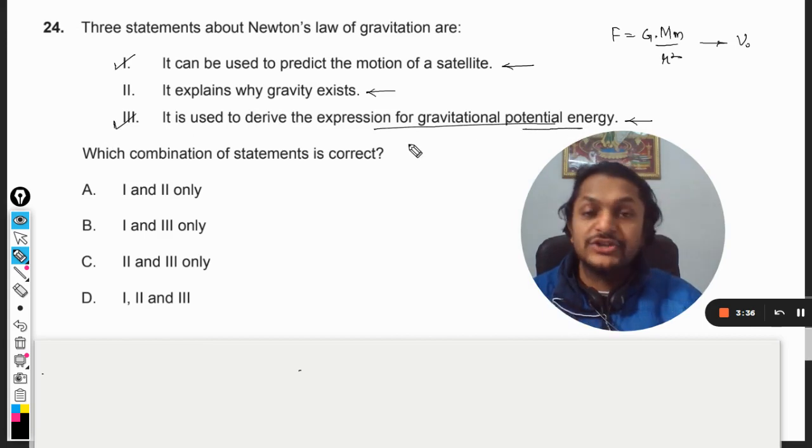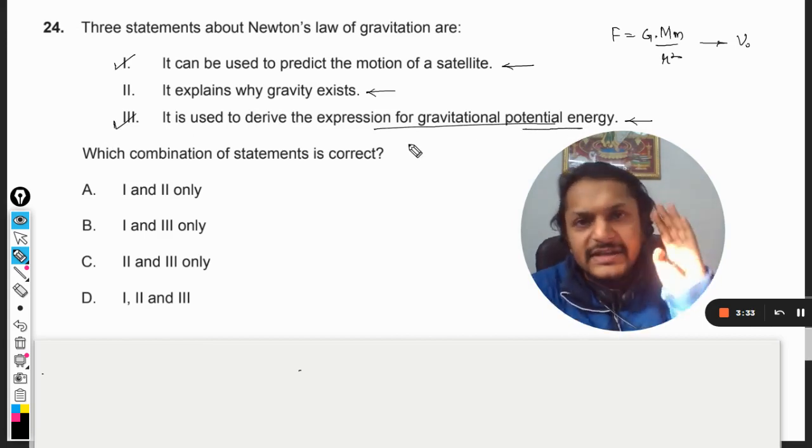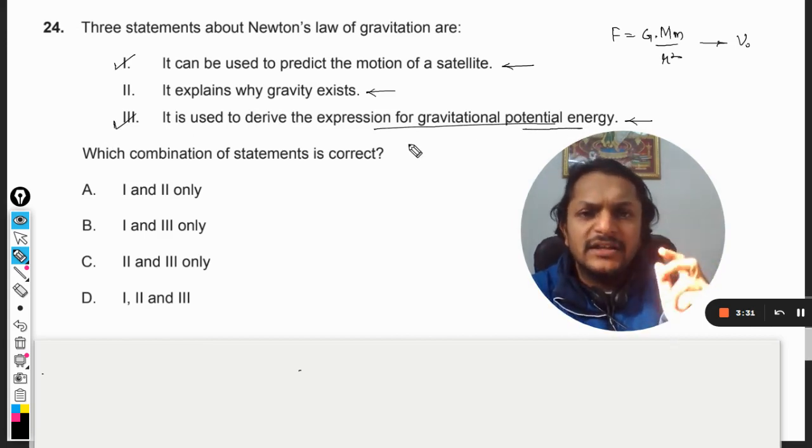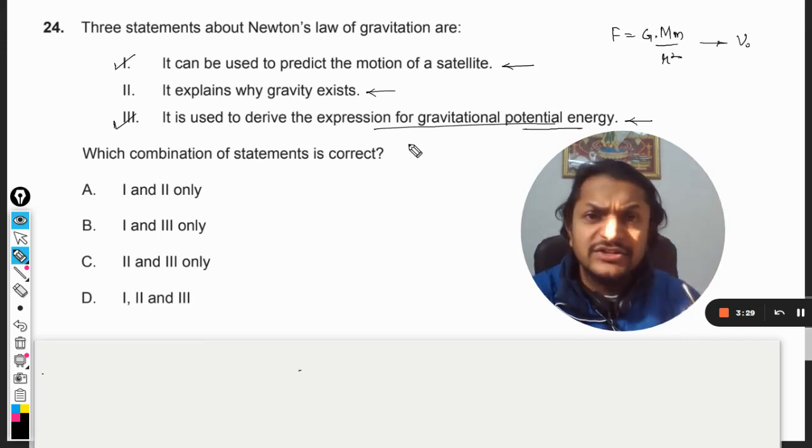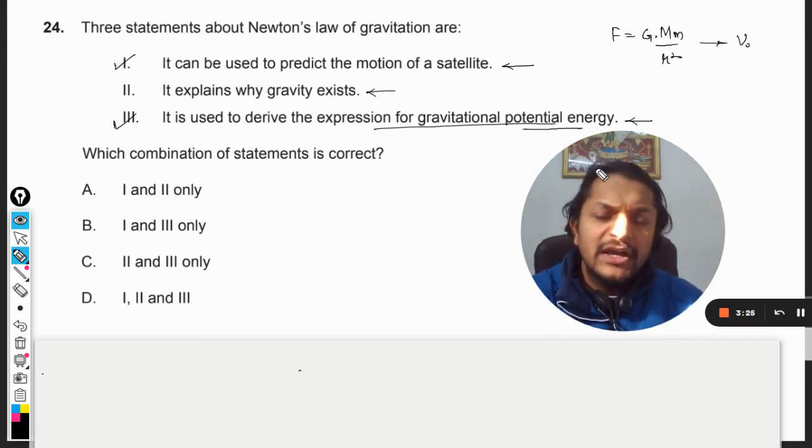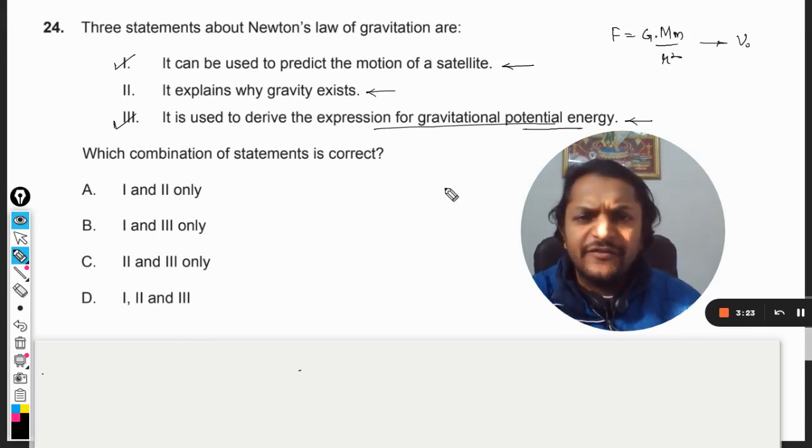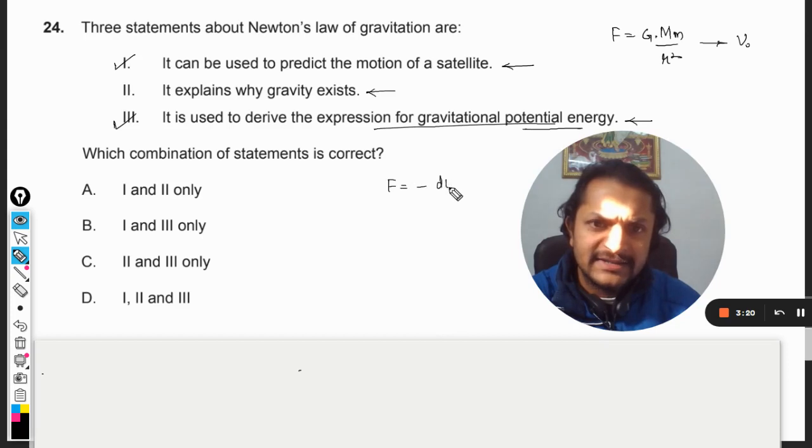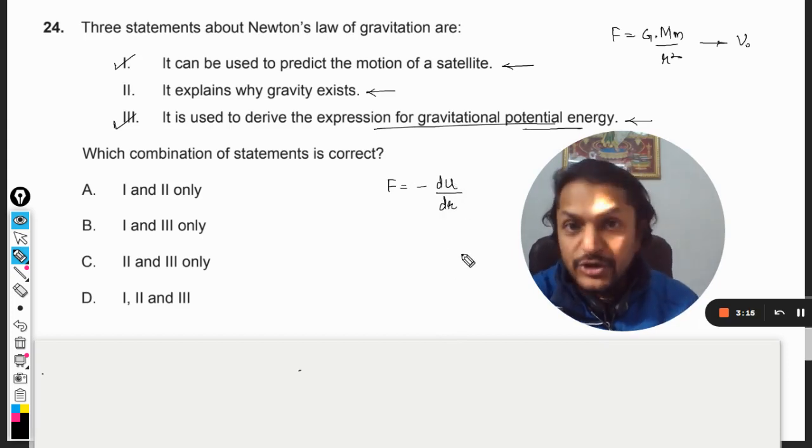Let us go to point number three first. It is used to derive the expression for gravitational potential energy. Well absolutely yes, but I think the derivation for gravitational potential energy is not given in our books for IB. There is a formula here that F is equal to minus dU by dr.